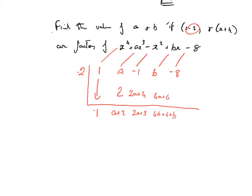We'll multiply that by 2, and that's going to be 8a plus 12 plus 2b. 8a plus 12 plus 2b minus 8. That's going to be 8a plus 4 plus 2b is equal to 0. Why equal to 0? Because it's a factor.